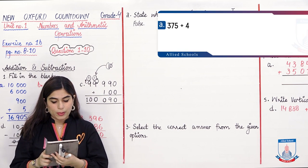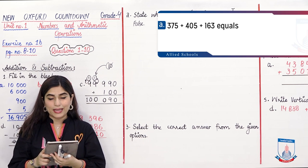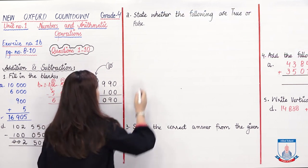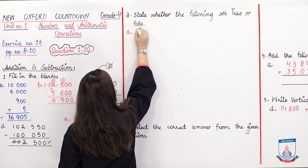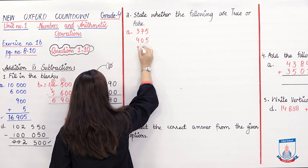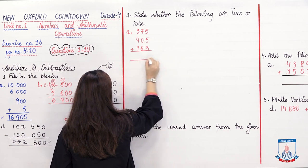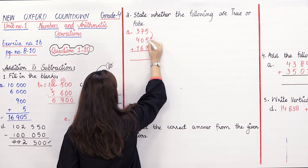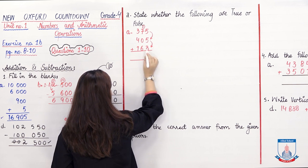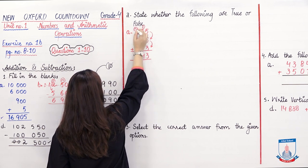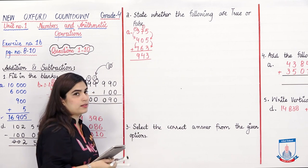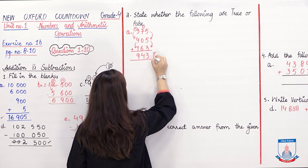Part A: 375 plus 405 plus 163 equals 943. We have three values and need to check if the answer is 943. Adding vertically: 5 plus 5 is 10, plus 3 is 13 — write 3, carry 1. 7 plus 0 plus 6 plus carry gives 14 — carry again. 3 plus 4 plus 1 plus carry gives 9. The answer matches 943, so Part A is TRUE.